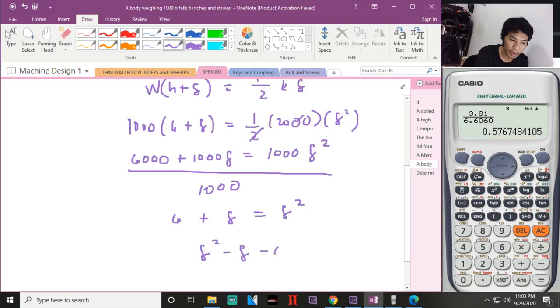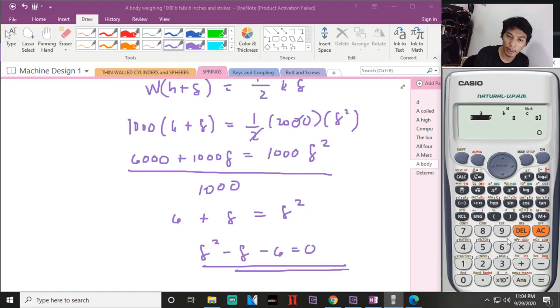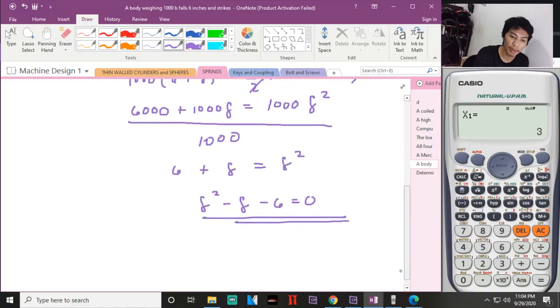Reform this to make it a quadratic equation: deflection squared minus deflection minus six equal to zero. So using the quadratic equation, that is 5, 3, 1, negative 1, negative 1, negative 6. The answer will be three and negative two. So the more reasonable value is three. Therefore the deflection is three inches.